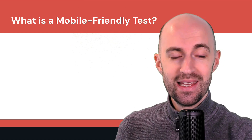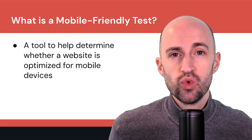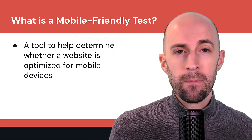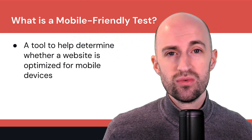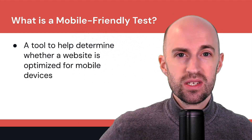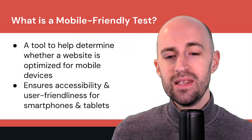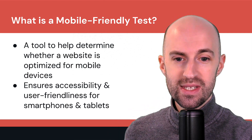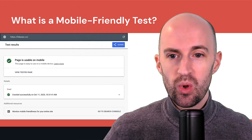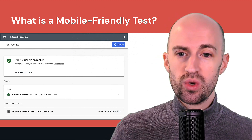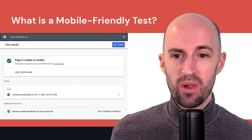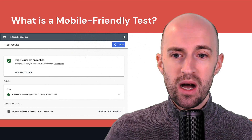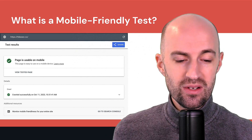So what is a mobile friendly test? It's basically a tool to help you determine whether a website is optimized for mobile devices — it could be smartphones, it could be tablets, anything in between. This ensures accessibility and user friendliness for smartphones and tablets. Here's an example of a mobile friendly test from Google, where you put your URL in, for example HiCascio.co, and it tells you if the page is usable on mobile and any other details or hints.